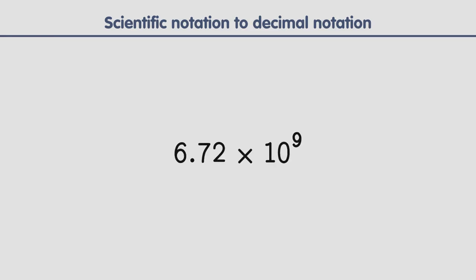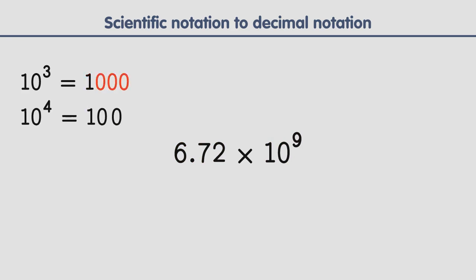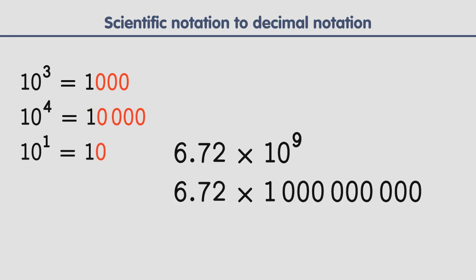To convert a number in scientific notation to a decimal number, we have to perform a simple multiplication between the first coefficient and the power of 10. This is a very simple multiplication, because a power of 10 can be written as the digit 1 followed by a number of zeros determined by the exponent. For example, 10 to the 3rd is equal to 1000 — the digit 1 followed by 3 zeros. 10 to the 4th is equal to 10,000 — the digit 1 followed by 4 zeros. 10 to the 1st is equal to 10 — the digit 1 followed by one zero. Therefore, this notation is equal to this decimal number.